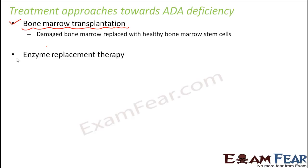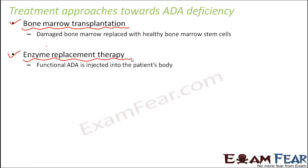Another approach is enzyme replacement therapy, where functional ADA is directly injected into the patient's body to fill the deficiency. But this is also not permanent — the enzyme gets used up helping the immune system, and deficiency returns. It is also extremely complex and expensive to keep repeating these processes. So bone marrow transplantation and enzyme replacement therapy are not permanent cures.